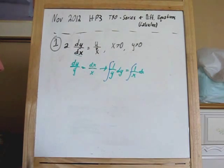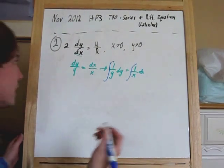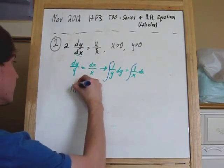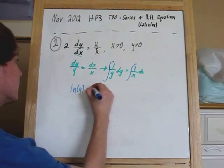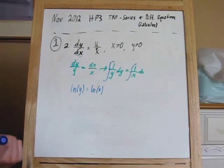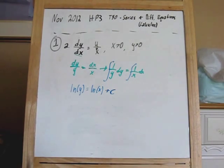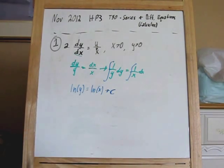The 1 over a variable is on the list of common integrals under topic 6 in the formula booklet. Integrating, we get that the integral of 1 over y dy is the natural log of y, and 1 over x dx is the natural log of x, plus c. The reason I use parentheses here and not absolute value bars as given in the formula booklet is because we know that x and y are greater than 0, so they're always going to be positive.